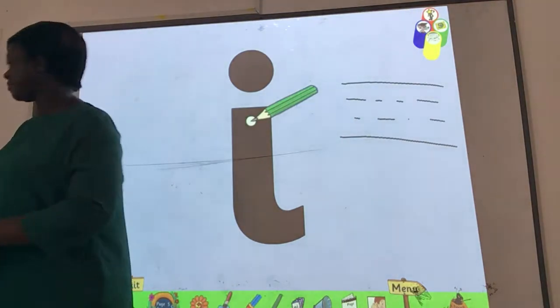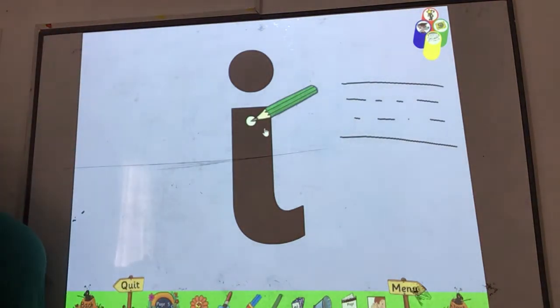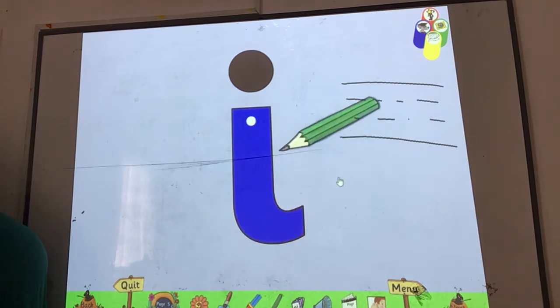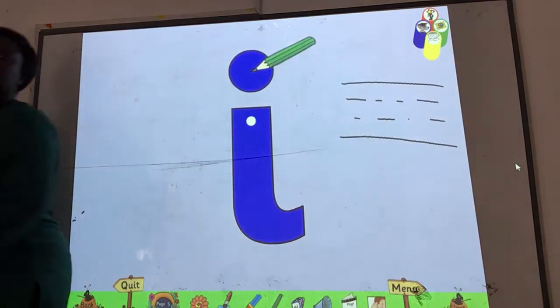So let's write the sound E. Let's go. Stand in line, tail and dot. Very easy.